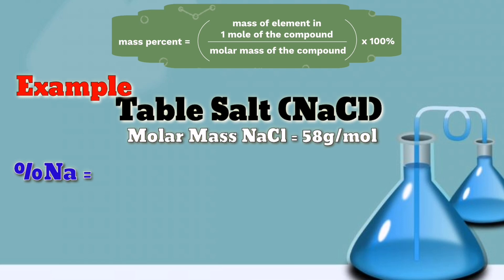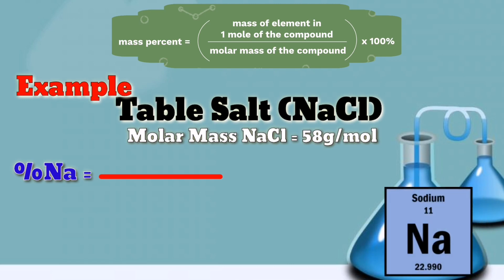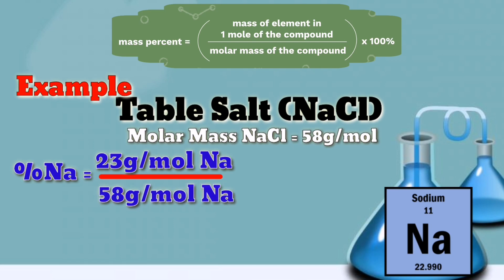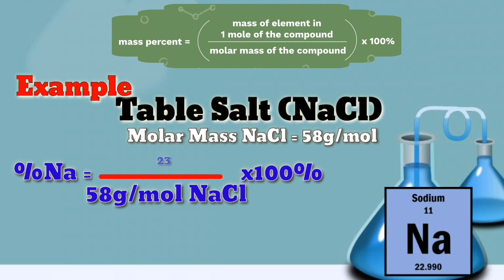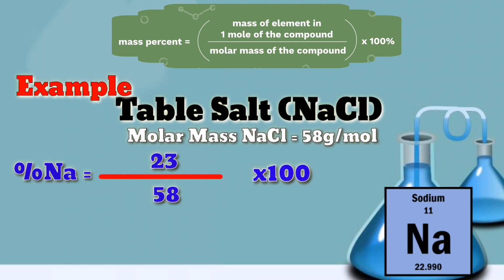The percent of sodium equals its atomic weight. Looking at your periodic table, the atomic weight of sodium is 22.990, but we can round it up to 23 grams per mole of sodium. Divided by the molar mass of table salt, which is 58 grams per mole, times 100 percent. So 23 divided by 58 times 100 is 40 percent sodium.